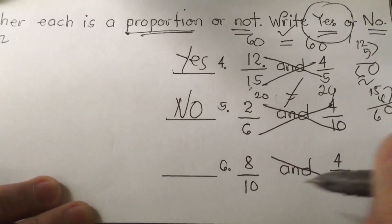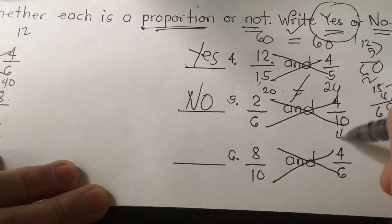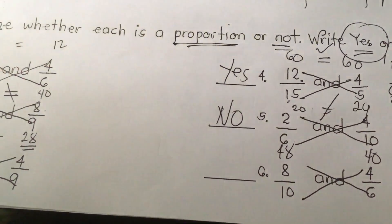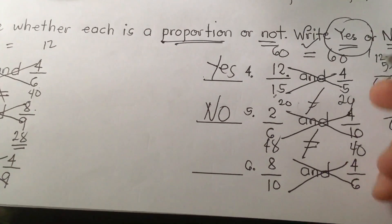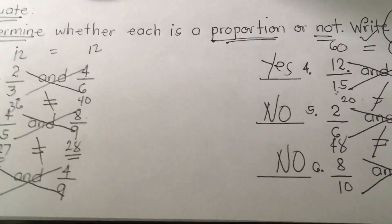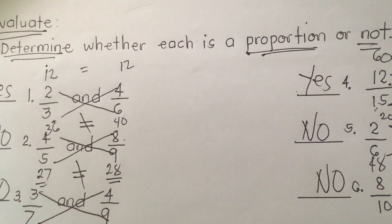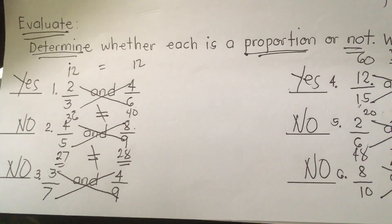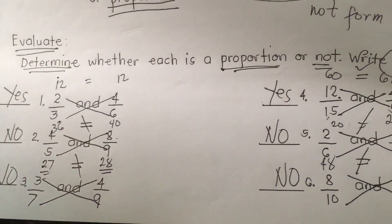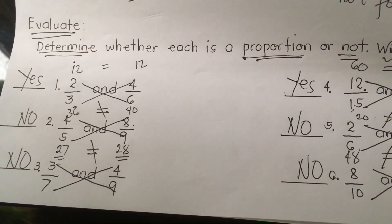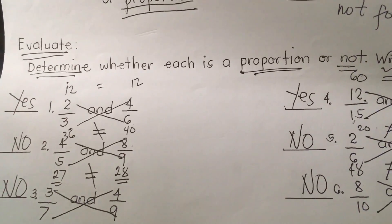Item 6: 8/6 and 10/4. Cross multiply: 8 times 6 is 48, and 10 times 4 is 40. 48 is not equal to 40 — no, not a proportion. That is the concept of proportion: we show whether each is equal or not equal.